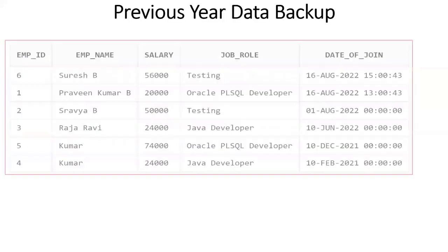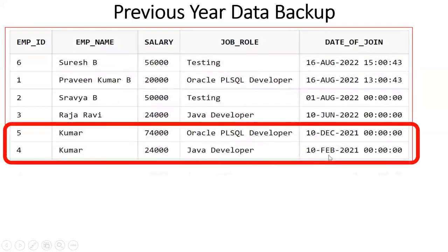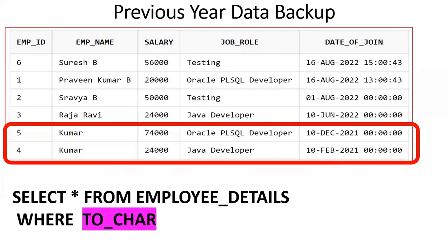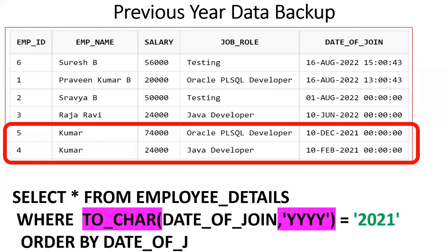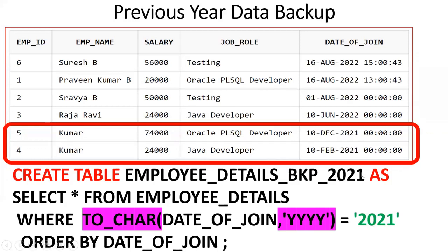Now one more requirement: previous year data backup. Previous year means 2021 — two records are there. Same requirement: SELECT * FROM employee_details, filter using TO_CHAR(date_of_joining, 'YYYY') = '2021'. I am also doing an ORDER BY clause so the data will be sorted. On top, using CTAS: CREATE TABLE employee_details_BKP_2021. By seeing this, we say this is a backup table of employee_details for 2021.